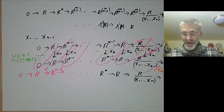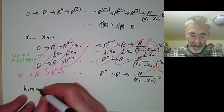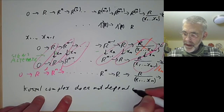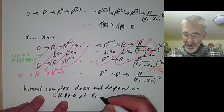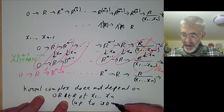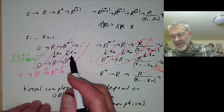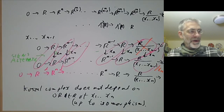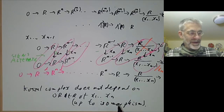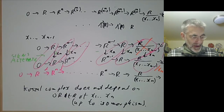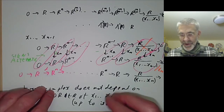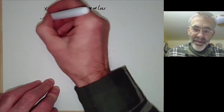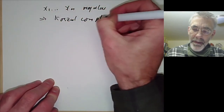If you write out a formula for the differential explicitly, you see that the Koszul complex does not depend on the order of x1 up to xn, up to isomorphism. To see this you have to work out what the differential is explicitly and you see it's really independent of the order.